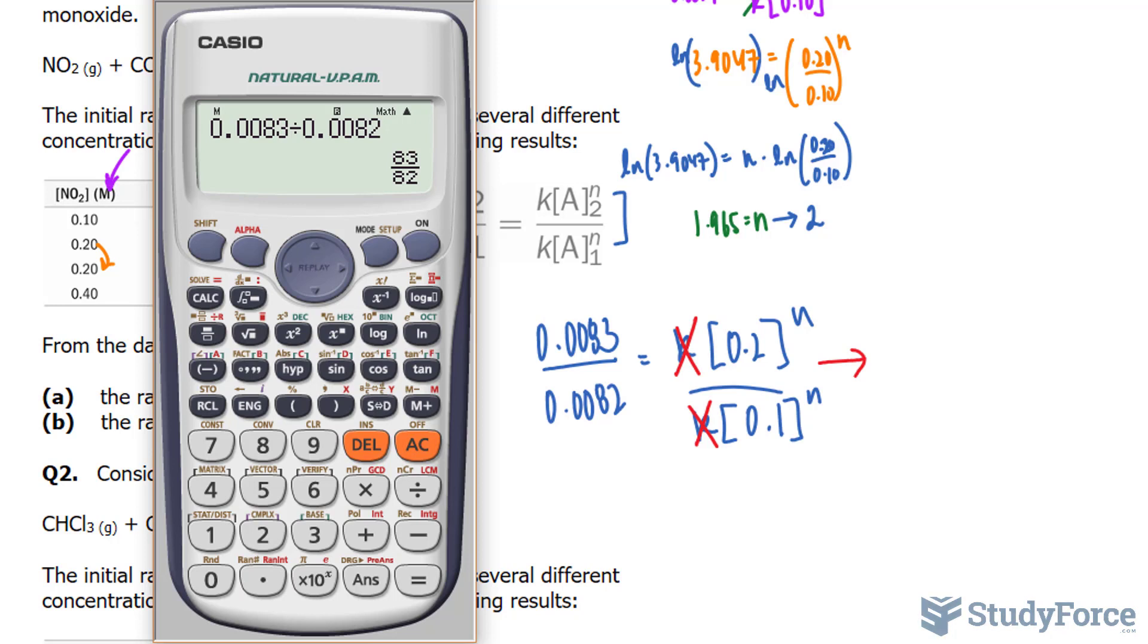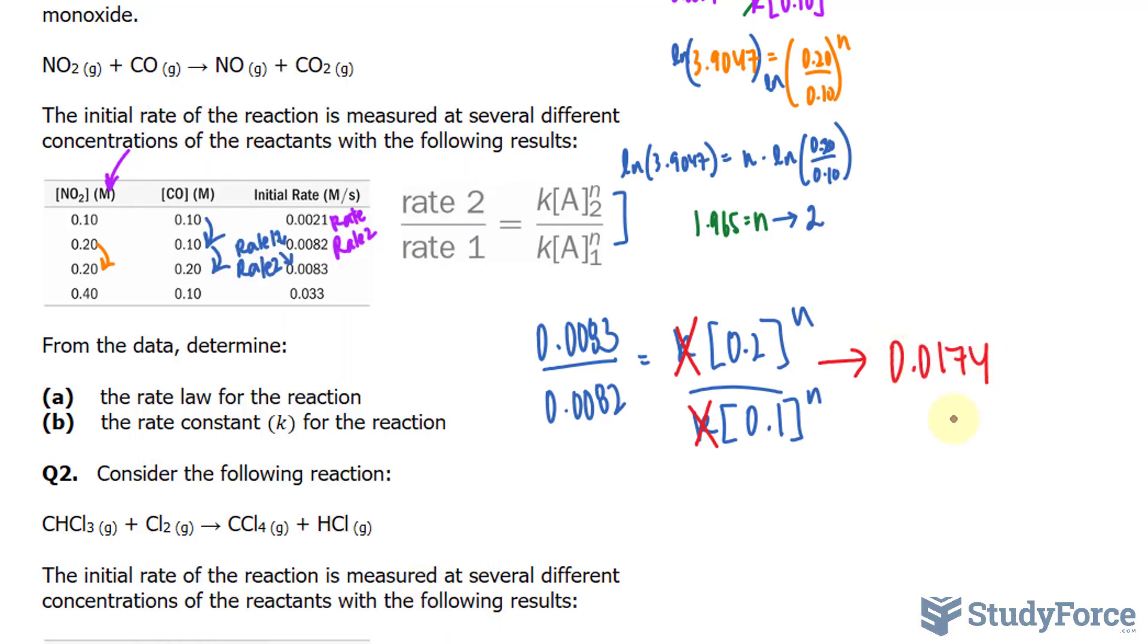And I'll take the ln of this number, divide it by the ln of the quotient of those two. So 0.2 divided by 0.1, and this should give us n.